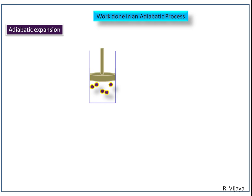Now we are going to discuss work done in an adiabatic process. First we see work done in an adiabatic expansion. Let us consider a cylinder having a frictionless piston that contains n number of gas molecules. The cylinder is perfectly fitted with an insulator, so it is considered as an adiabatic system. Its initial volume is V1 and its initial temperature is T2, which is considered as high temperature.